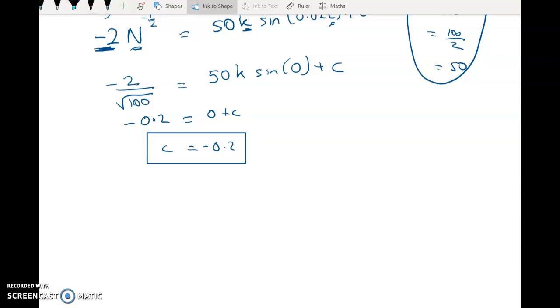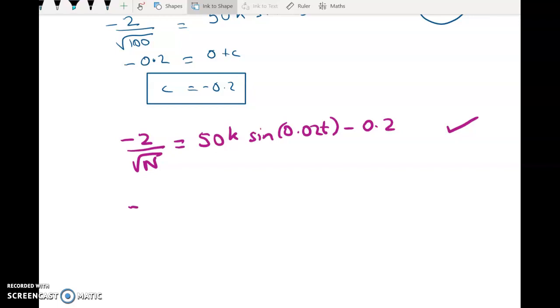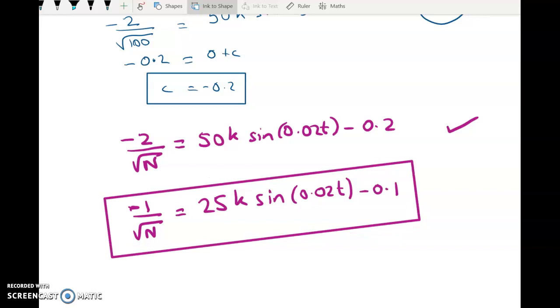Chucking that back in, what do we get? We've got negative 2 over root N equals 50K sine of 0.02T minus 0.2. So that's my first tick for the first five marks. I'm going to clean this up by taking out a common factor of 2. I don't have to do that.